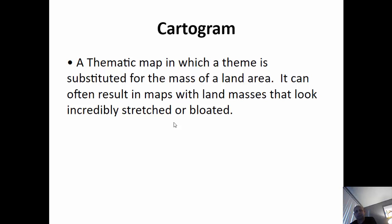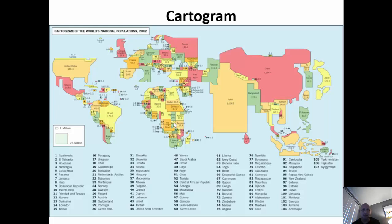A cartogram is a thematic map where a theme is substituted for the mass of the area — it can result in really bloated or stretched-looking maps that are easy to spot. This world map shows population: the cartogram has taken the landmasses of countries and made them fatter or skinnier depending on how much of the world's population they have. India and China together have almost half the world's population, so their landmasses have been massively exaggerated. Look at Canada — a huge country but only about 30 million people, so this cartogram has completely minimized Canada's size to reflect that it's only responsible for a very small number of people on Earth. You can really see that people are not evenly distributed.